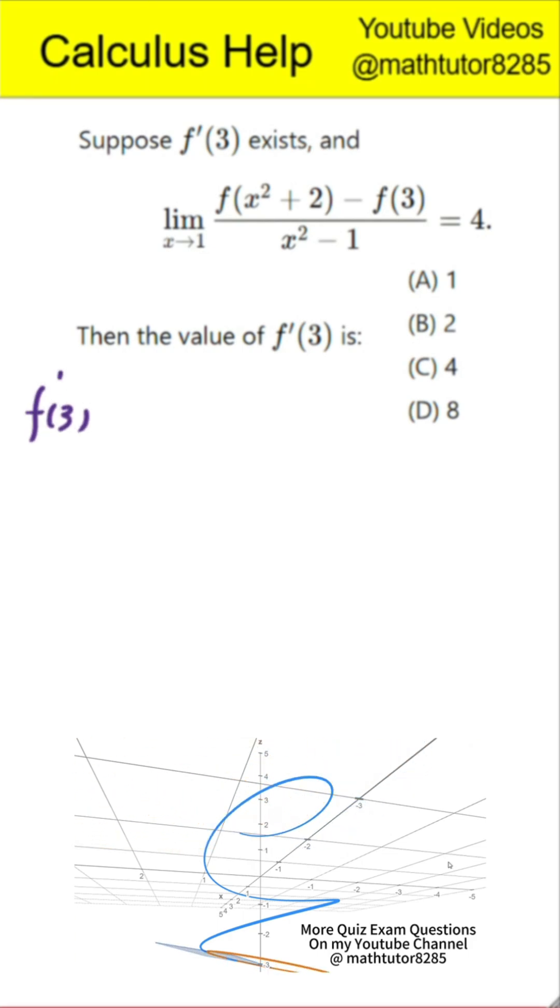We recognize the hidden derivative. Since the derivative of f at 3 exists, by definition, it equals the limit as u approaches 3 of the fraction f(u) - f(3) divided by u - 3.